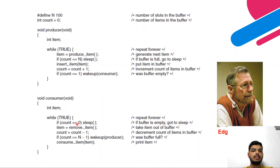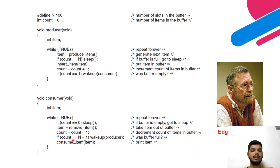Now let's understand the consumer process. First it checks: if count equals zero, meaning there are no items in the buffer, the consumer goes to sleep. This is the counterpart to the producer's check — if count equals the buffer size, the producer sleeps because there are no slots; if count is zero, the consumer sleeps because there are no items. If items are present, the consumer removes an item and decrements count. If count was equal to the buffer size — meaning the buffer was full — it wakes up the producer.